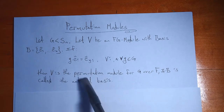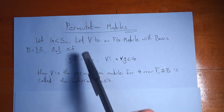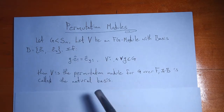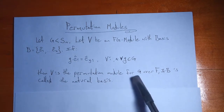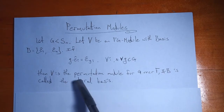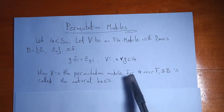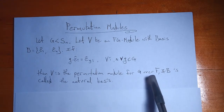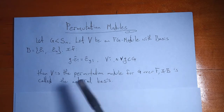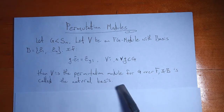It's a special kind of FG module where the group is a permutation group. We say that it's a permutation module for G over F, and we call B the natural basis.